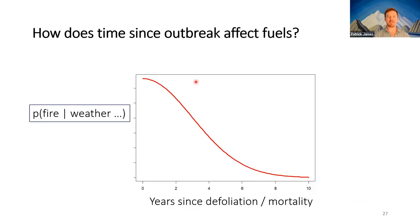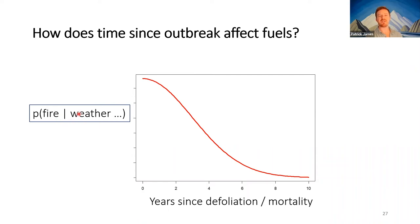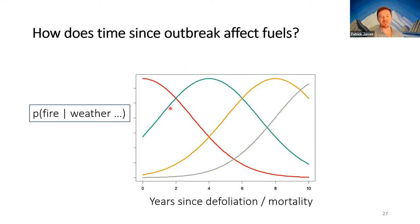The conceptual model we're looking at has years since defoliation or mortality on the x-axis — noting that different studies use defoliation versus mortality as the starting point, which can produce different results. We have this conceptual curve: how does the probability of fire — say, ignition given a bunch of weather variables — change through time? Maybe there's a lag with a peak later. What is this lag time between the outbreak and the actual physical change of fire hazard on the landscape? Our hypothesis is that this is related to fuel abundance and connectivity.